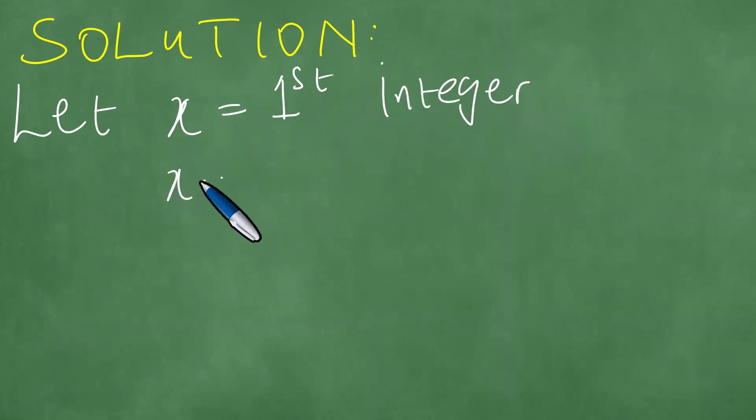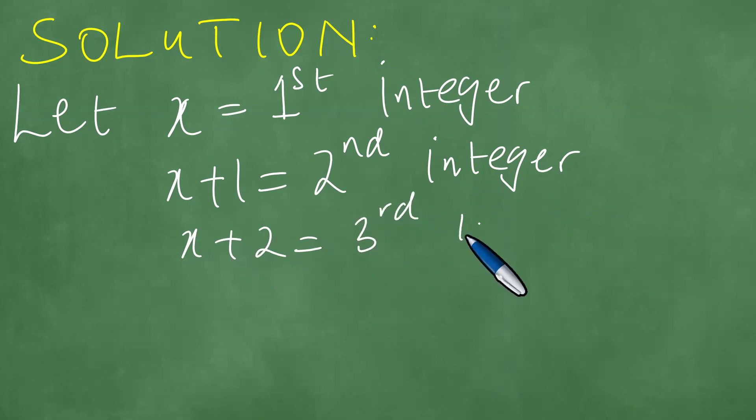Because they're consecutive, the next one is x plus one, so x plus one is the second integer. And then x plus two becomes the third integer.